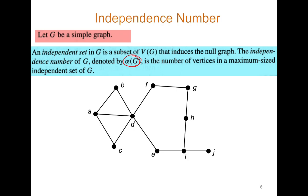Let's see an example — please try by yourself first. For the given graph, consider vertices b, c, f, e, h, and j. We can observe that all six of these vertices are independent of each other, and therefore α(G) = 6.